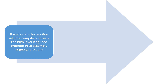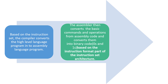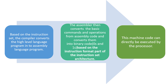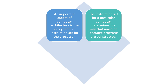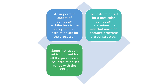Based on the instruction set, the compiler converts the high-level program into the assembly program. The assembler then converts the basic commands and operations from assembly code into 0s and 1s based on the instruction format defined by the instruction set architecture. This machine code can then be directly executed by the hardware. The instruction set for a particular computer determines how machine language programs are constructed, and the same instruction set is not used for all processors — it varies with the CPU.